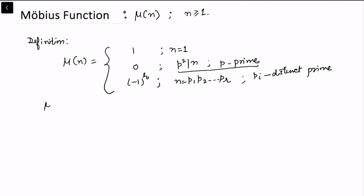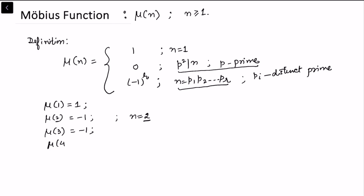Let's write down some early values. μ(1) = 1 by definition. For μ(2), there is only 1 prime, so this value is −1. μ(3) is again a single prime, so this value is −1. μ(4): now 4 is 2², so n is not a square-free number — it includes a square — and hence this value is 0.